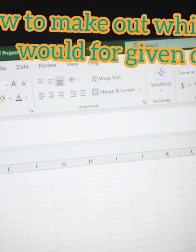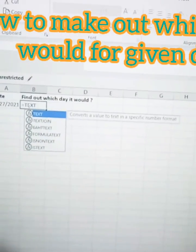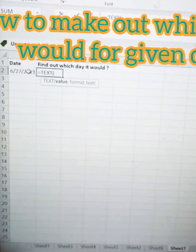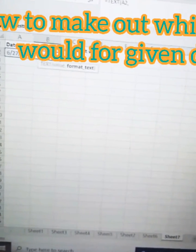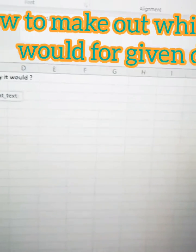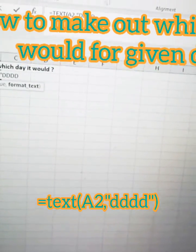Click here, equals, put text, open the bracket, choose the date, comma, and the desired output will be always in inverted commas. So yes, DD four times with inverted commas, close the bracket.